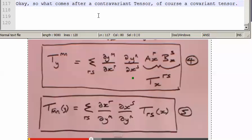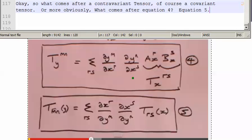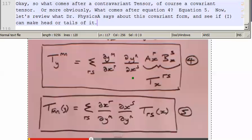Okay, so what comes after a contravariant tensor? Of course, a covariant tensor, or more naturally, more obviously, what comes after equation 4 is equation 5. Now let's review what Dr. Physics A says about this covariant form and see if I can make head or tails of it.